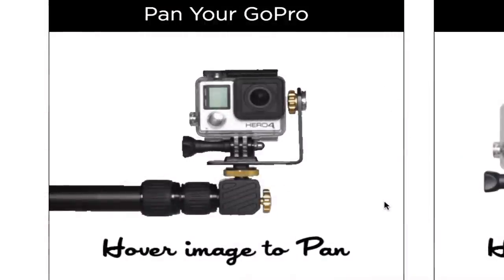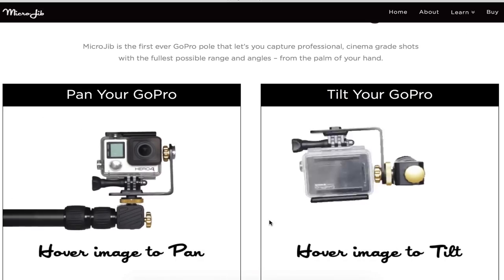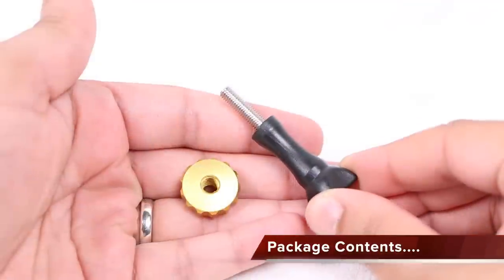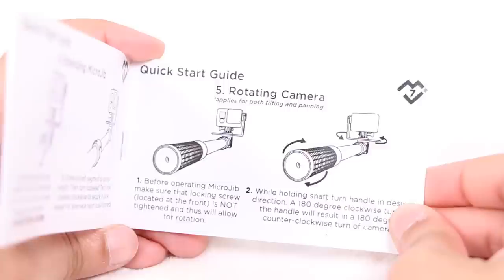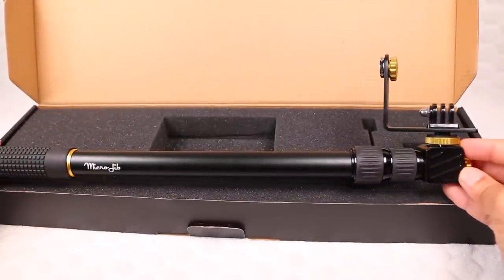For those who want to get straight in on the action, the Microjib will be exactly what you're looking for. Within the package, users receive a GoPro thumb screw and spare tilt nut, a user manual, and protected within the soft foam, the Microjib itself.